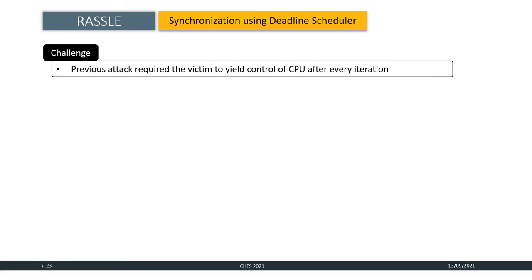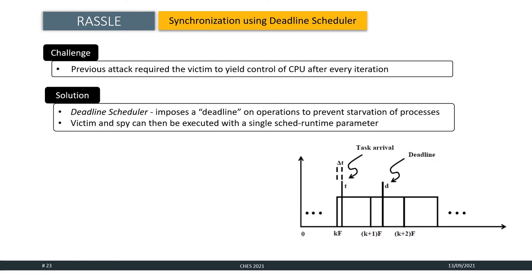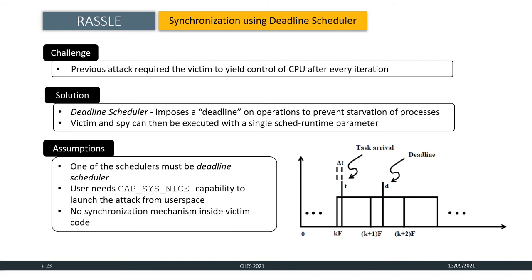This yielding of the control of the CPU can be made possible using deadline scheduler which impose a deadline on operations to prevent starvation of processes. The victim and the spy can then be executed with a single sched_runtime parameter. In this case, we assume that one of the schedulers must be a deadline scheduler of the system, and the user obviously needs to have Capsys nice capability to launch the attack from user space. However, no synchronization mechanism is required inside the victim code.